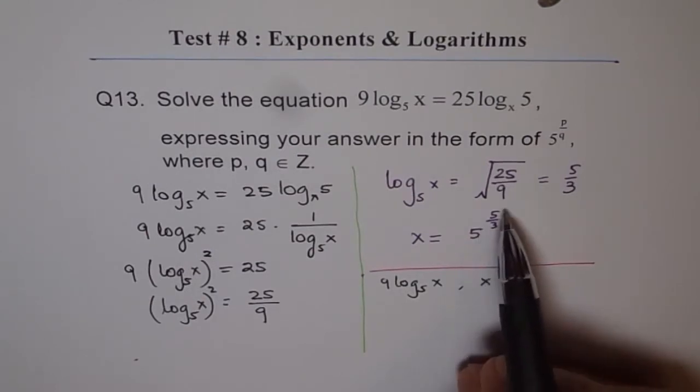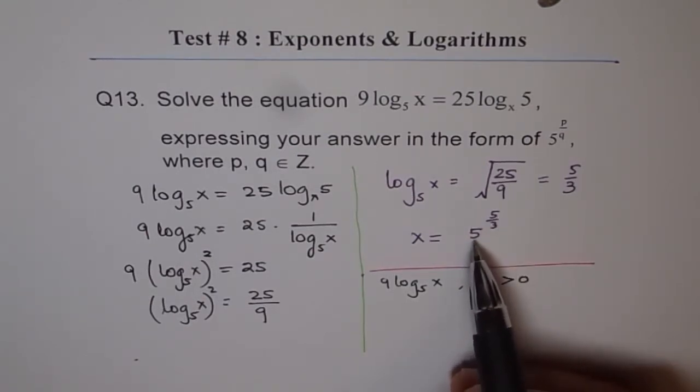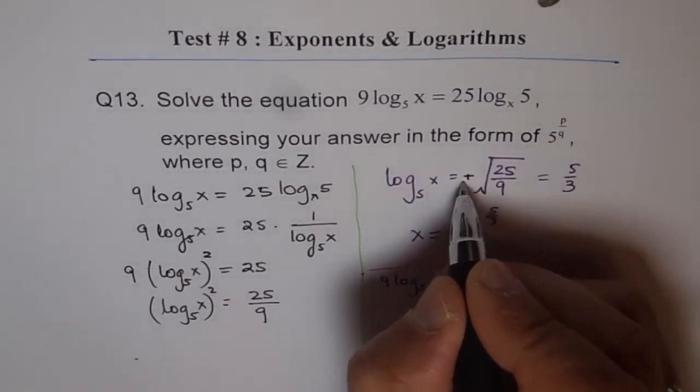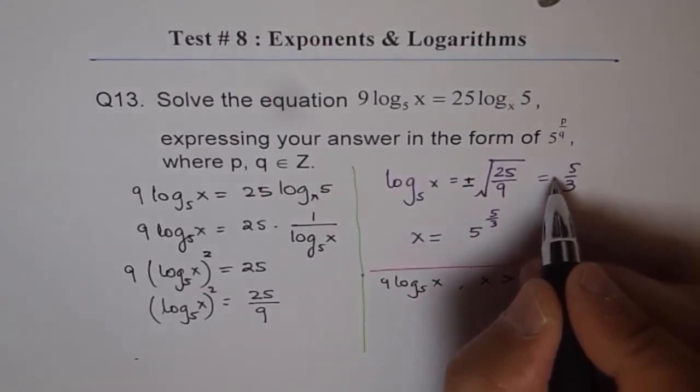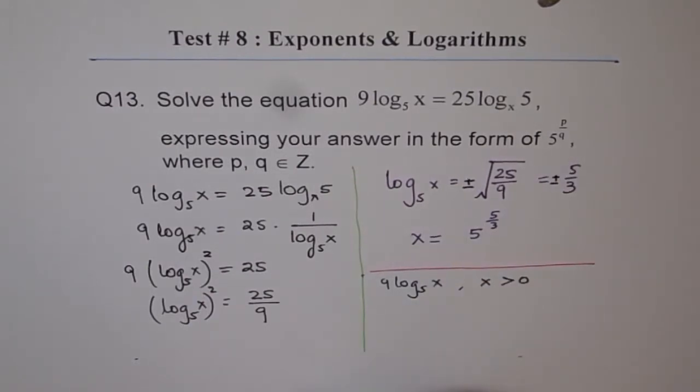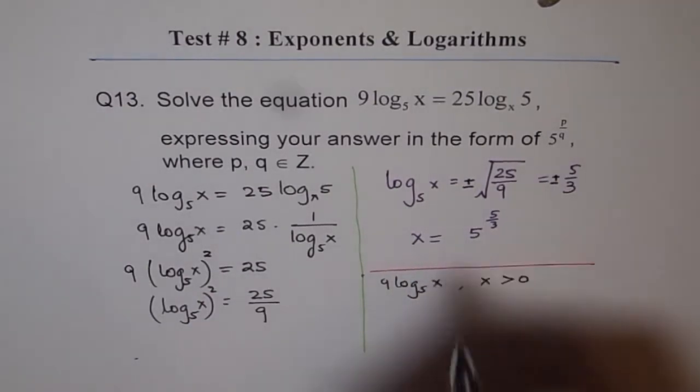And, as you know, if you have any exponent, 5 to the power of anything, it will always be positive. Exponential functions are positive. And, therefore, in such cases, we should have plus and minus here. So, that gives us two values, which is plus and minus 5 over 3. And, therefore, we have two answers here.